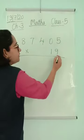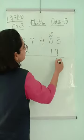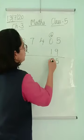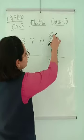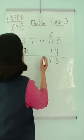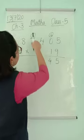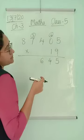9×5 are 45. 9×0 are 0 but 4 is here, so 4 counts here. 0 plus 4 is 4. 9×4 are 36, so 3 counts here. 9×7 are 63, 63 plus 3 is 66.